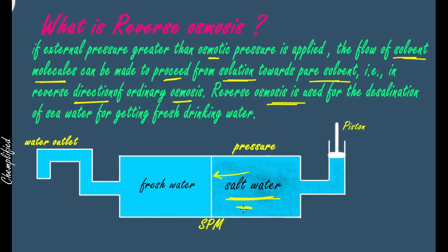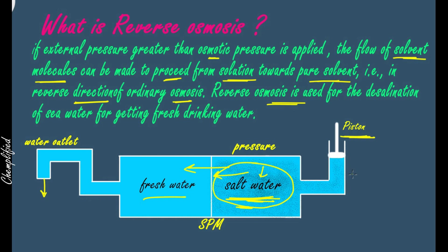The semi-permeable membrane only allows solvent particles to move through it, which means the salt present in the container will not be able to move towards the fresh water side. So what happens is the salt remains in the container and the water moves towards the fresh water container — this is your reverse osmosis, and this is what happens in RO. Inside the machines, pressure is applied and the pure water moves through the semi-permeable membrane to the water outlet. You apply pressure more than osmotic pressure to receive fresh water from salt water.